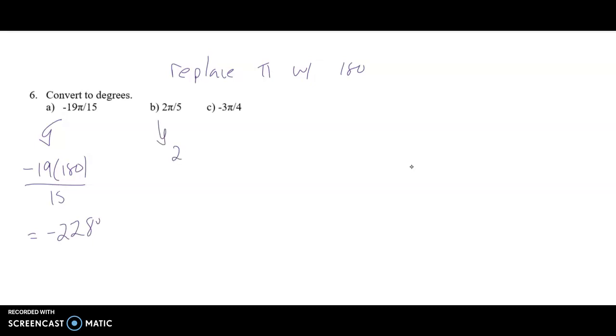For part B, I'll write 2, replace the pi with a 180, and then divide by 5. Type that into my calculator. I get 72 degrees.